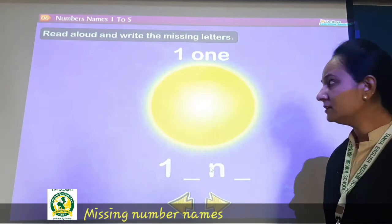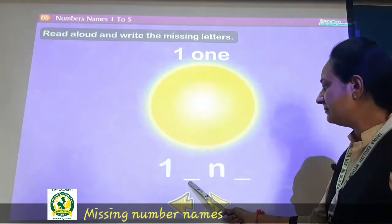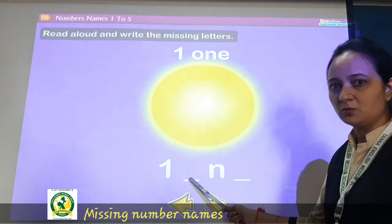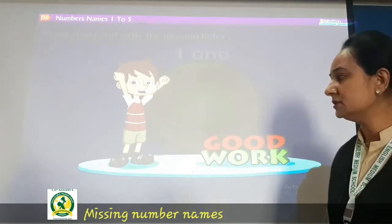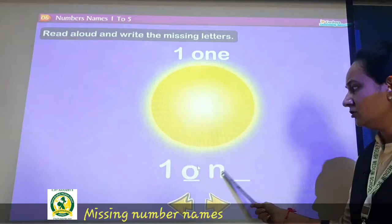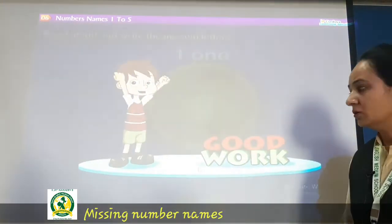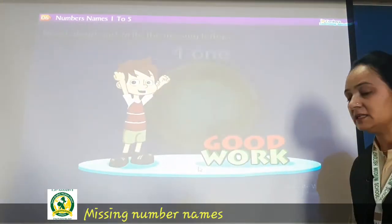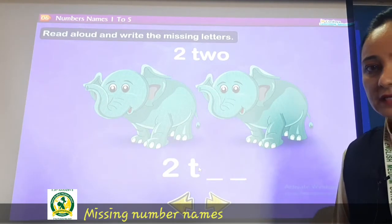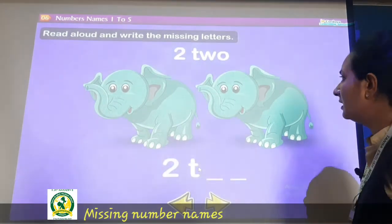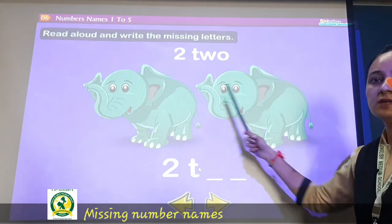ONE — O, N, E. So you have to fill in the letter here. O and E — ONE. Now see, how many elements are there? 1 and 2.